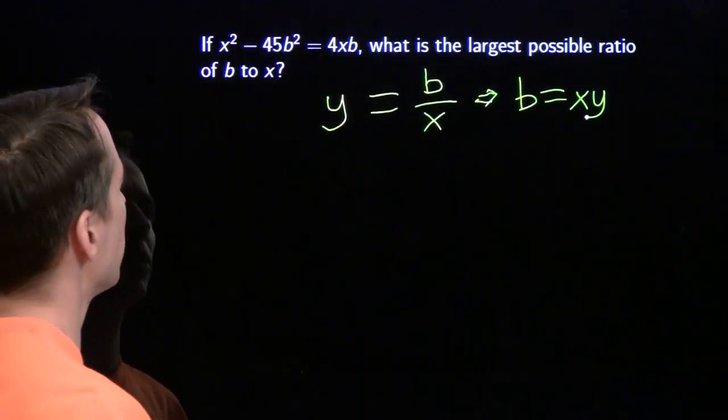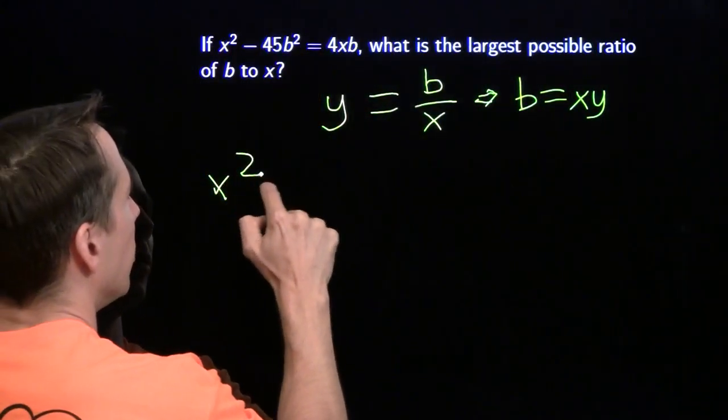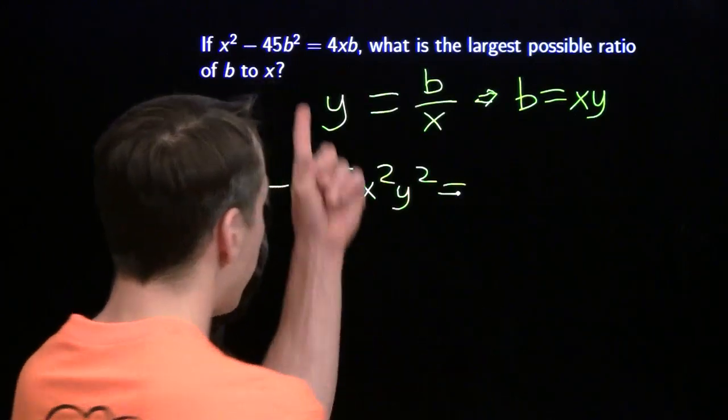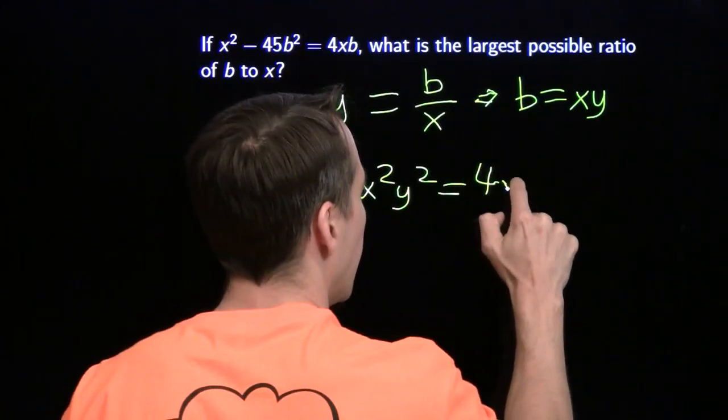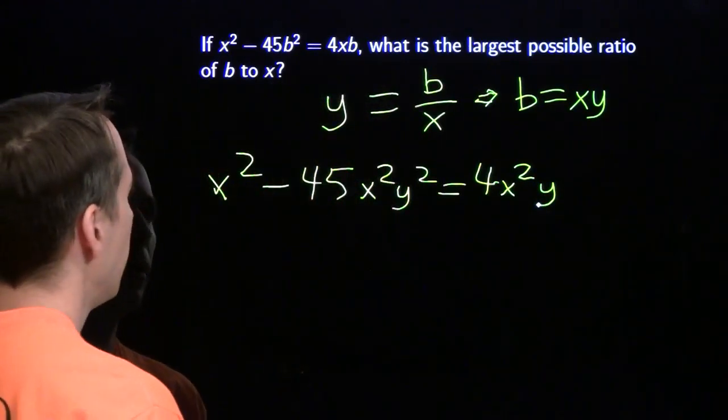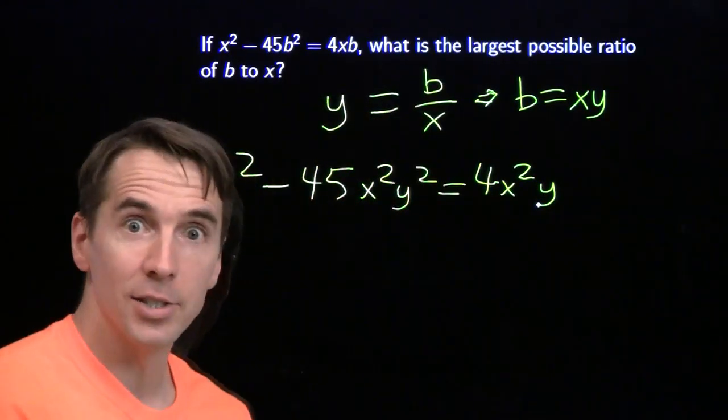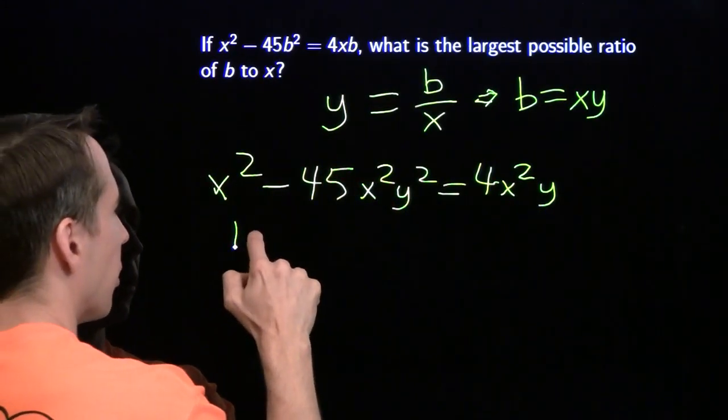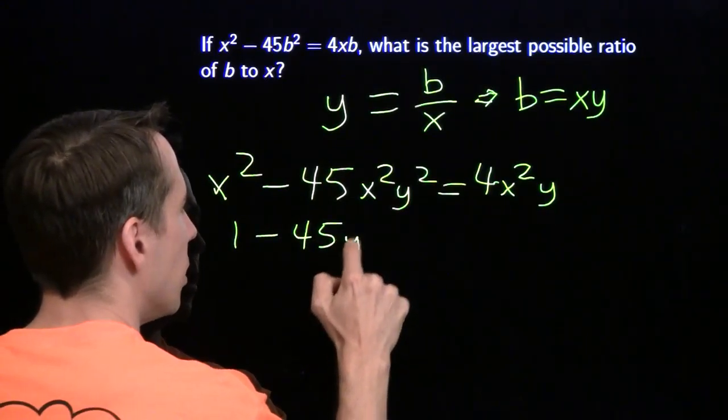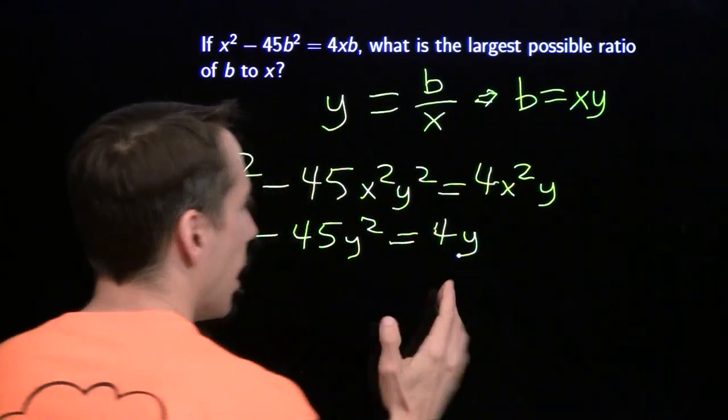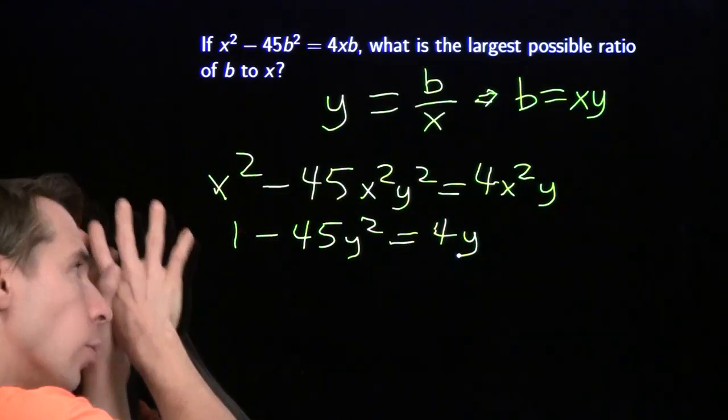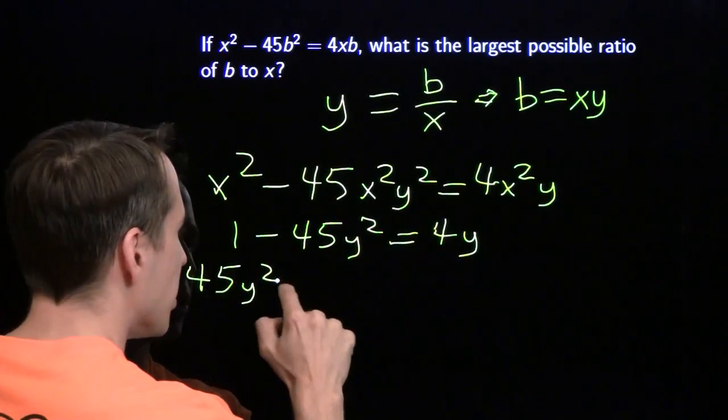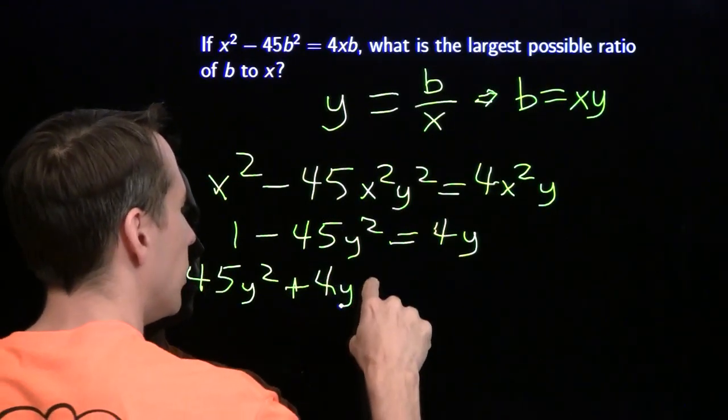Now I'm going to put that into this equation, and I'm going to get x squared minus 45 times x squared y squared equals 4x squared y. X squared, x squared, x squared. X isn't zero, so I can just divide by x squared, and they're all gone. And look what I'm left with: 1 minus 45y squared equals 4y. That's a quadratic. We know how to handle this.